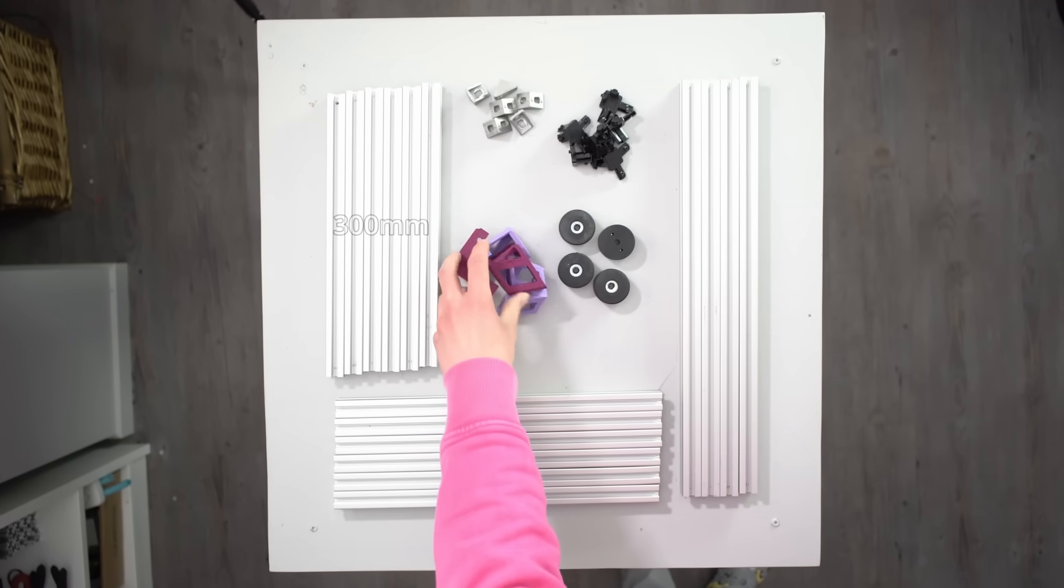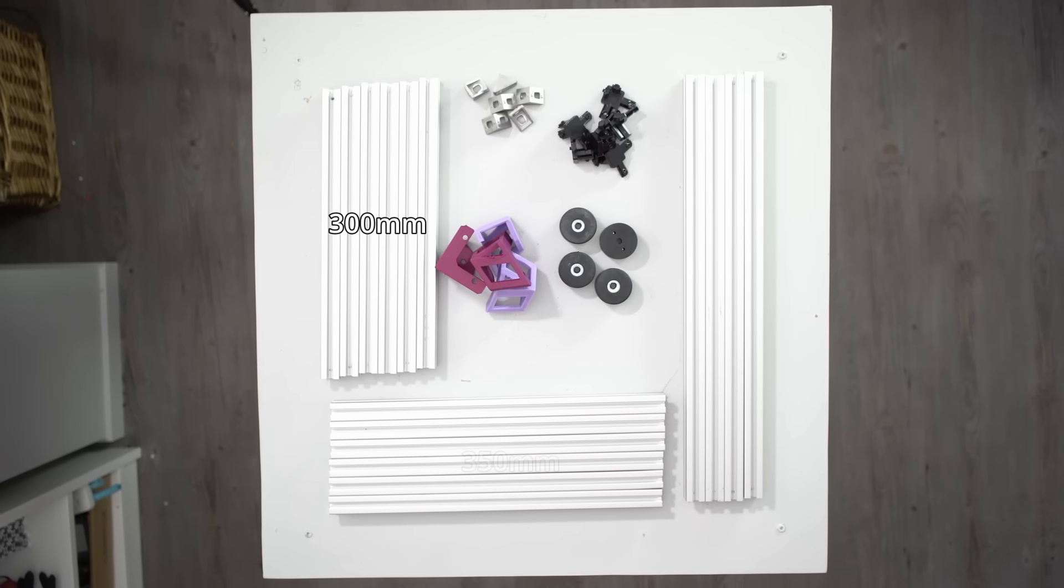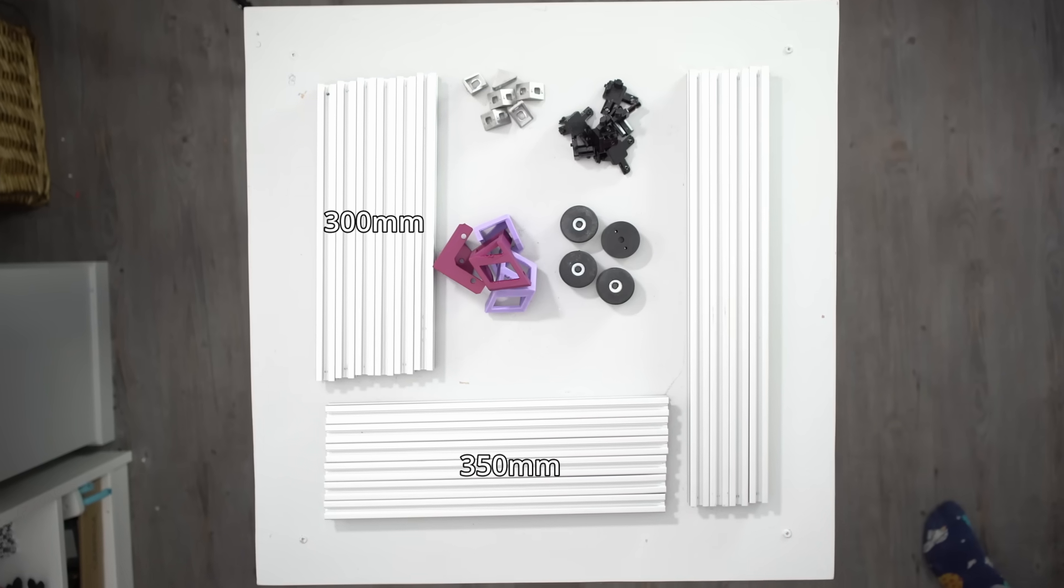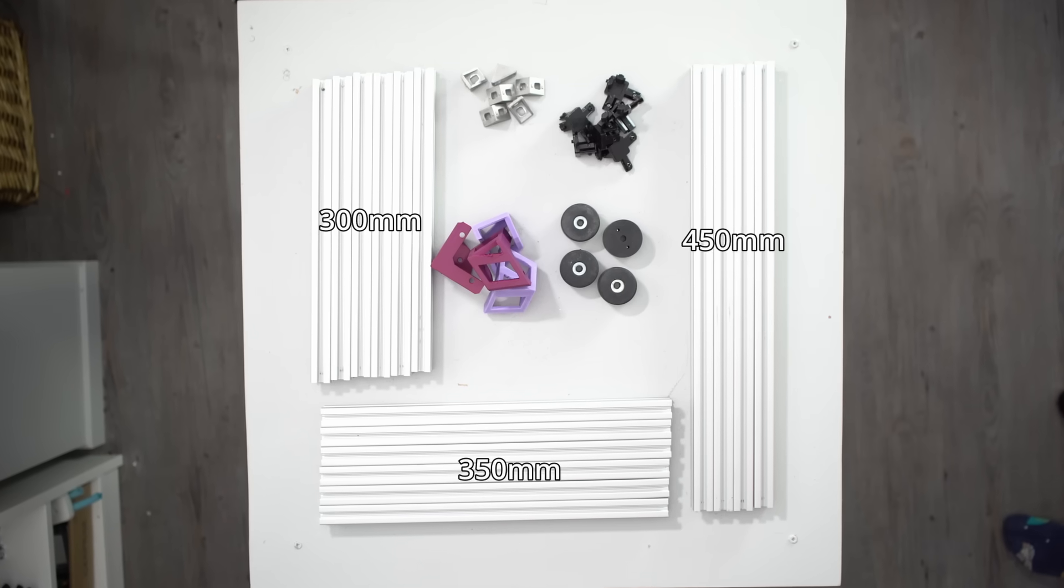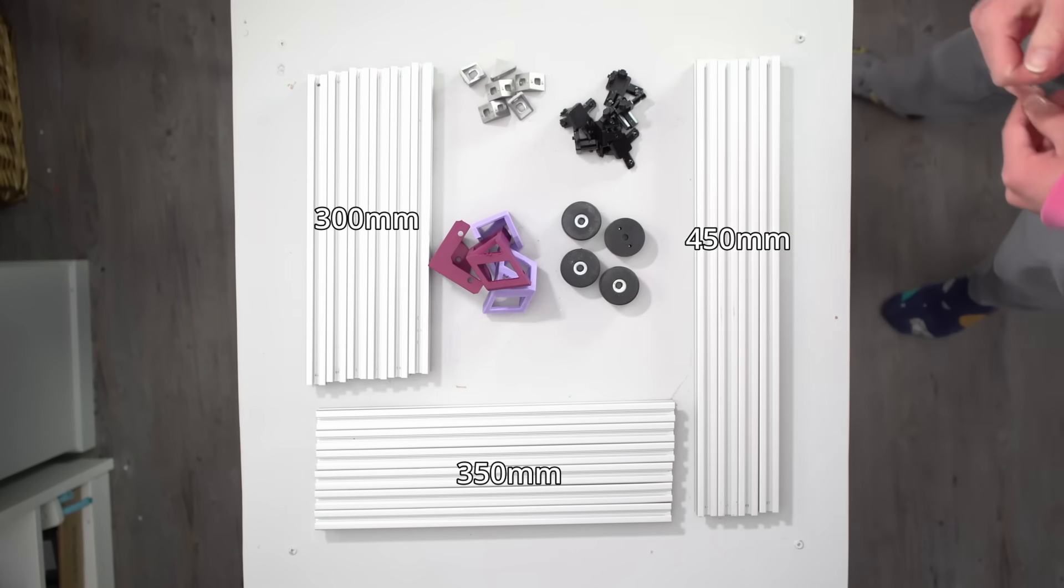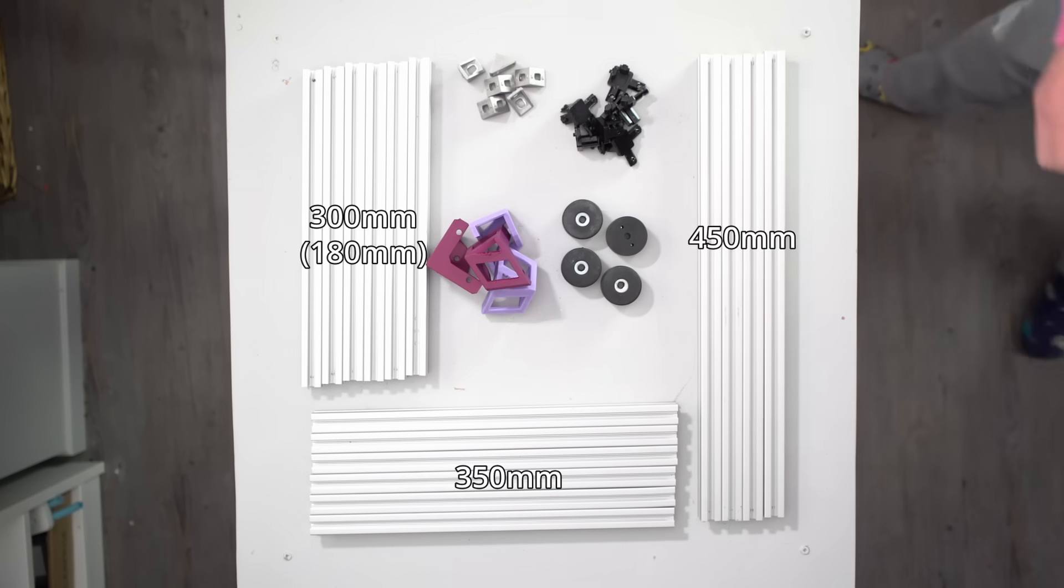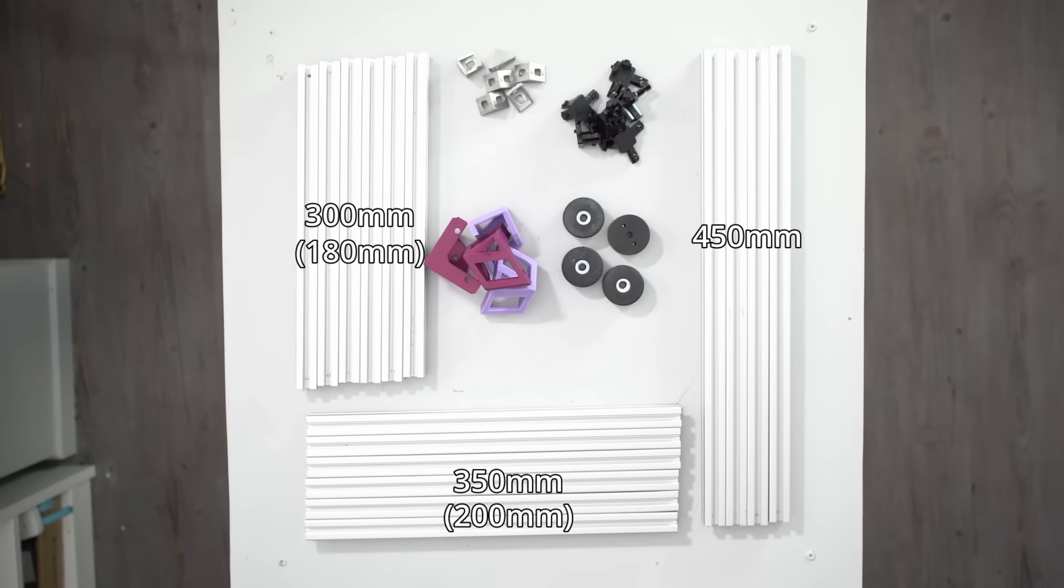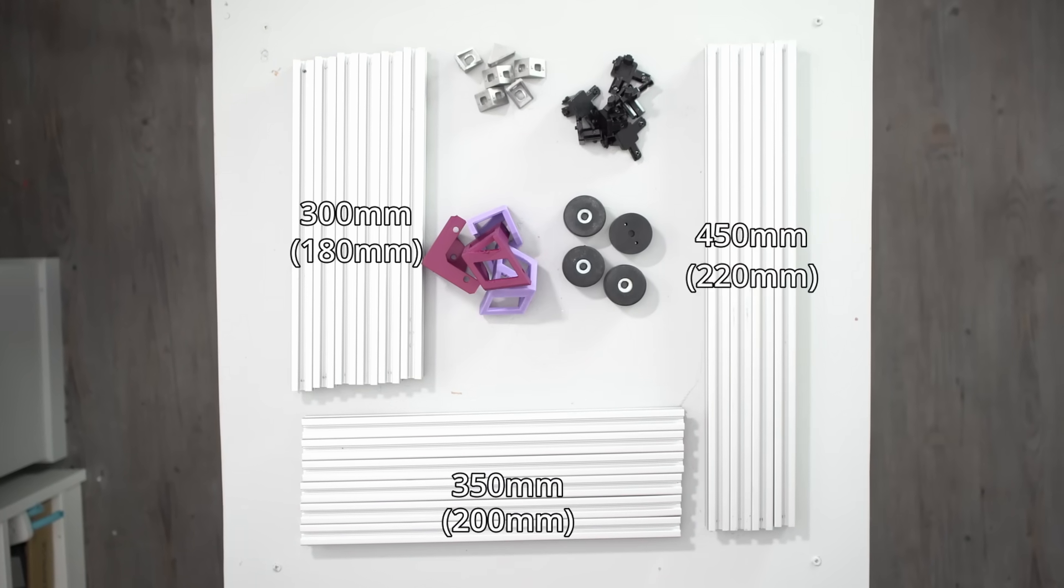For my build, I'm using 300mm extrusions for X, 350mm extrusions for Y, and 450mm extrusions for my verticals. That will give me 180mm of travel on X, 200mm on Y, and around 220mm on Z.